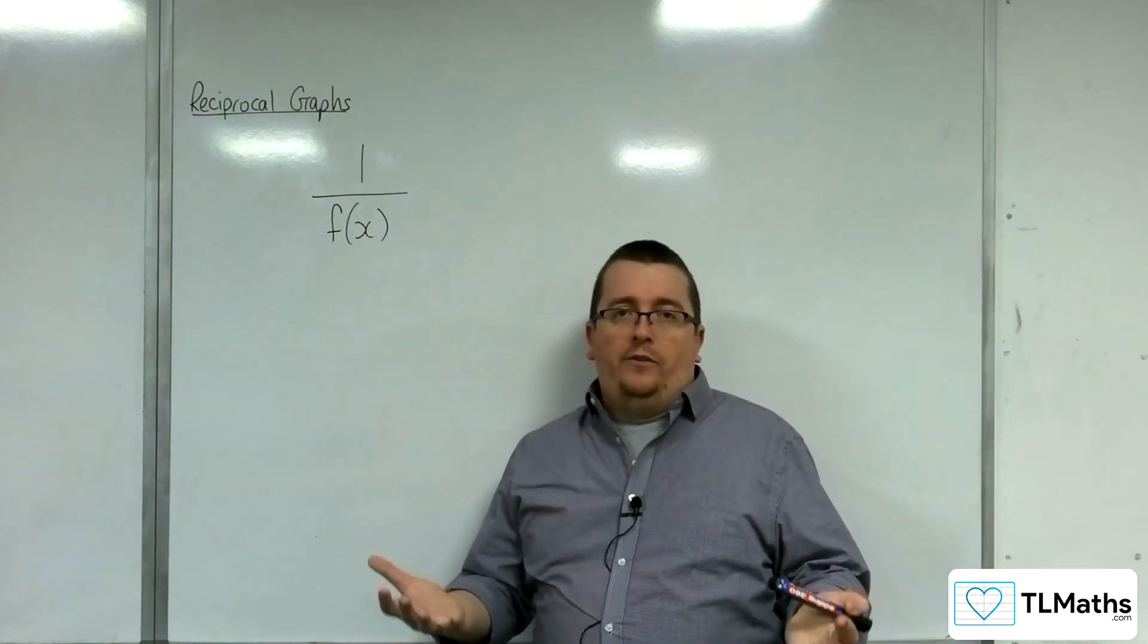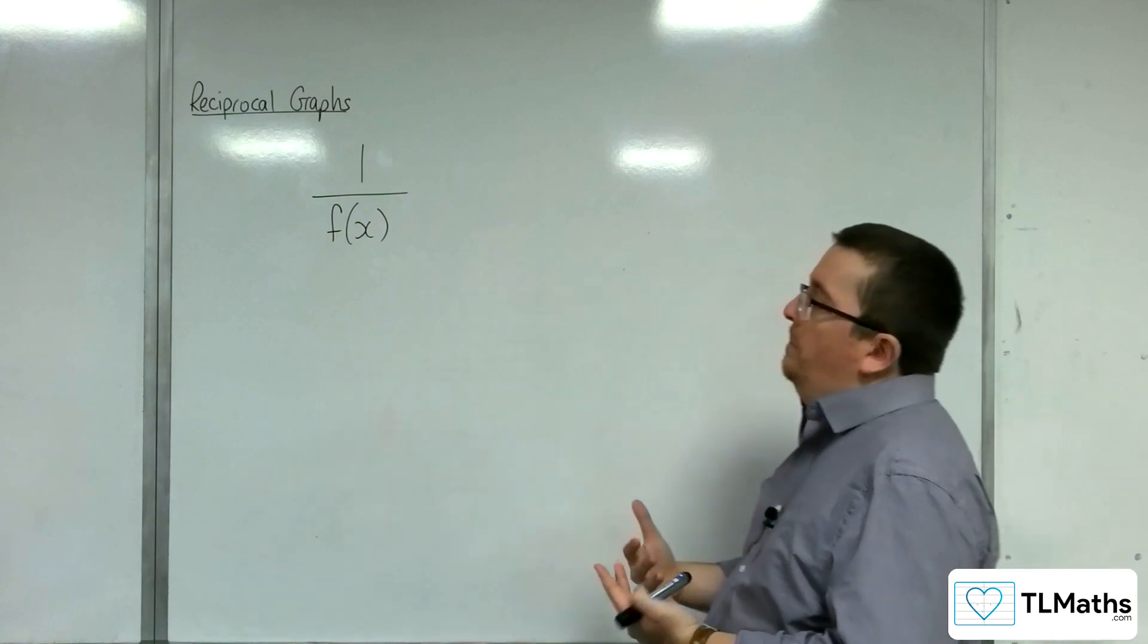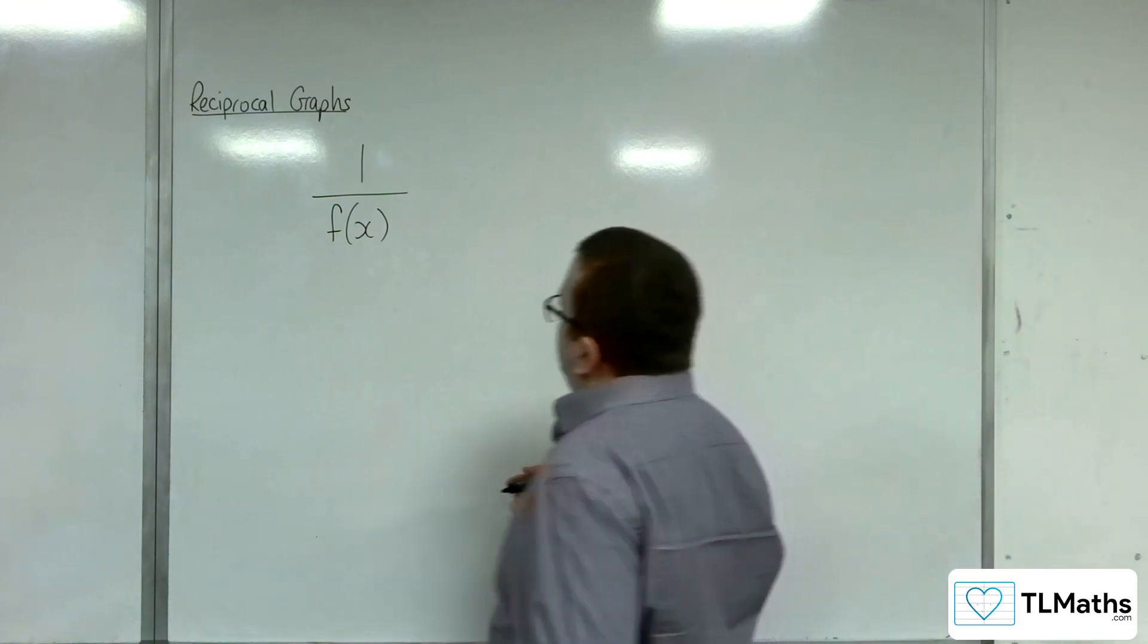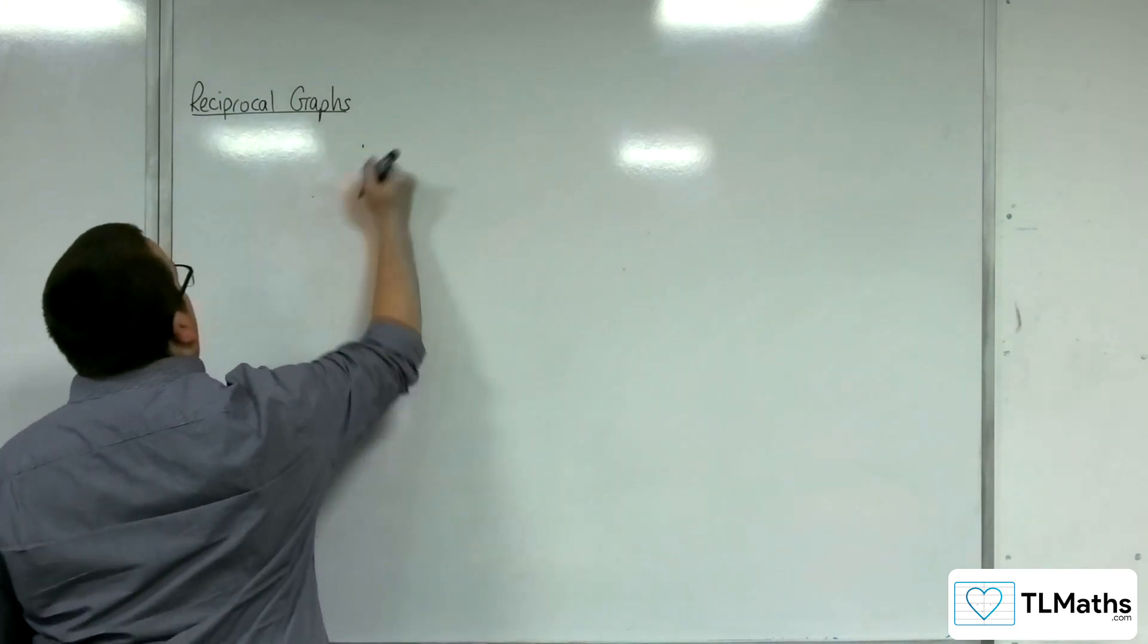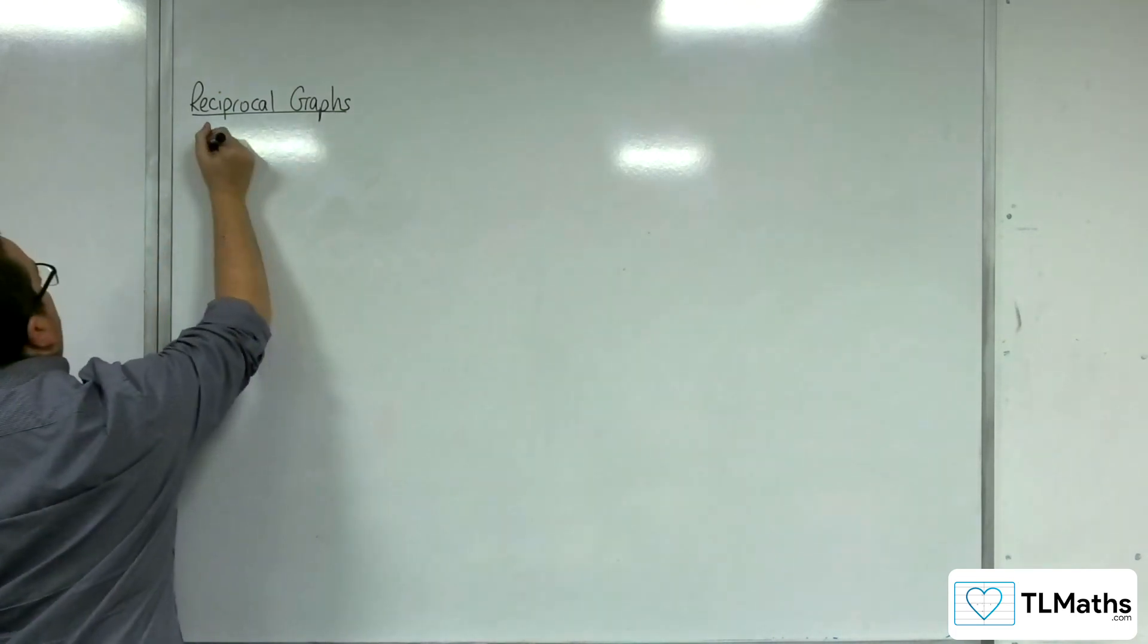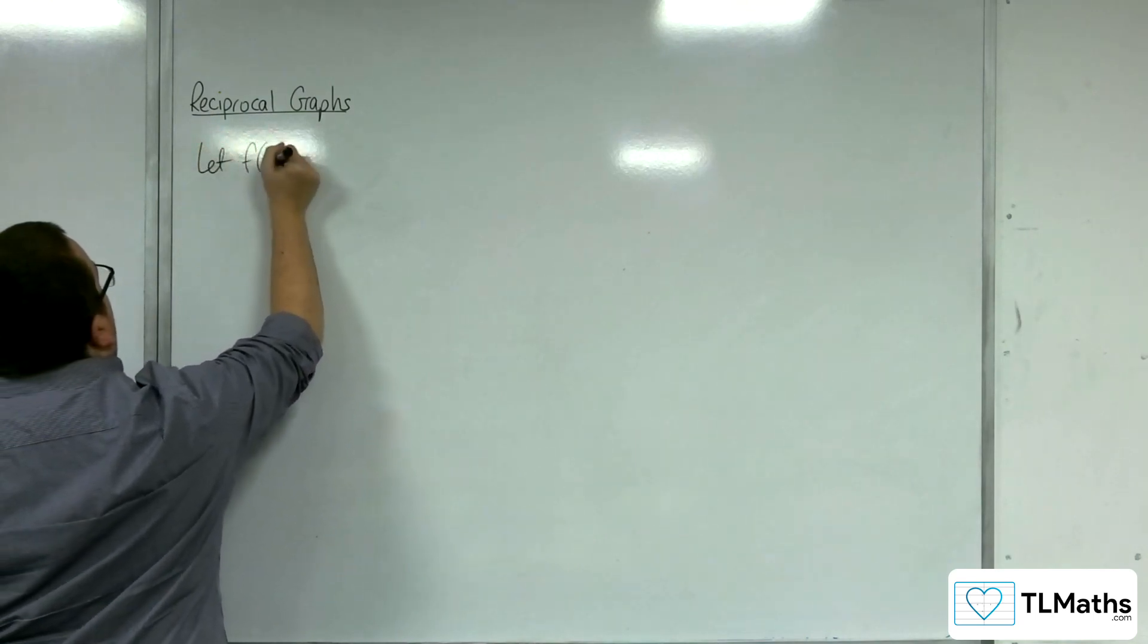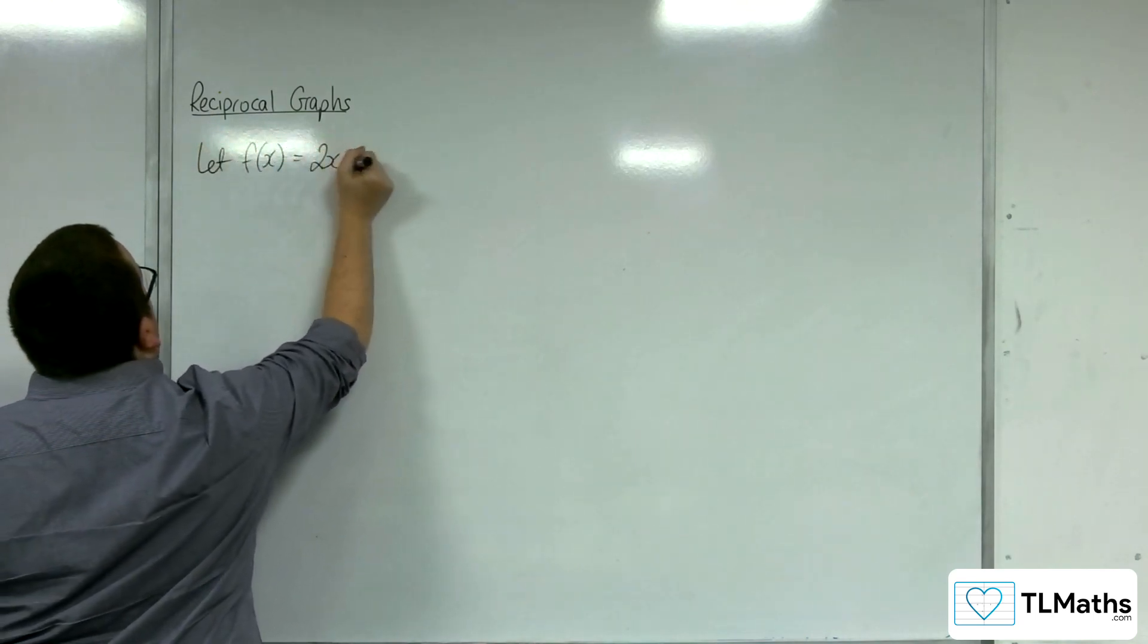Let's look at the basic example. And then in the following videos, we'll ramp this up. So let's say f of x was, so let's let f of x be something basic like 2x plus 1.